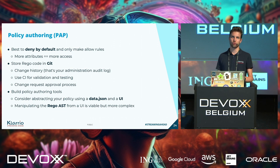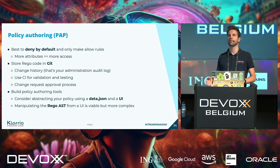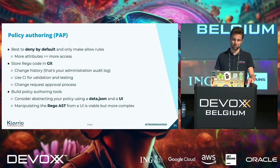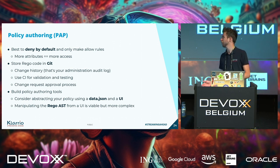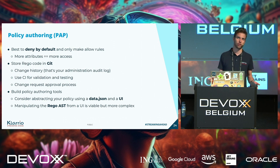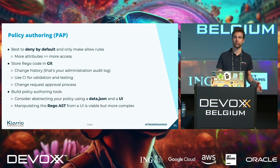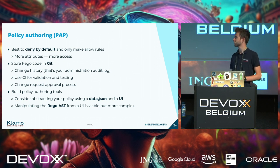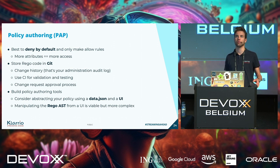You can still implement deny rules in Rego if you really want to — Rego allows you to do a lot of things. Another thing you'll want to do is store your Rego code in Git, just as with software. This gives you a free change history — essentially an administration audit log on your policy — and a CI flow you can reuse for validating and testing your policy. You can run unit tests inside your CI and have an entire approval process for policy changes, just like making a pull request for code changes. It's really, really effective to store your Rego code in Git.